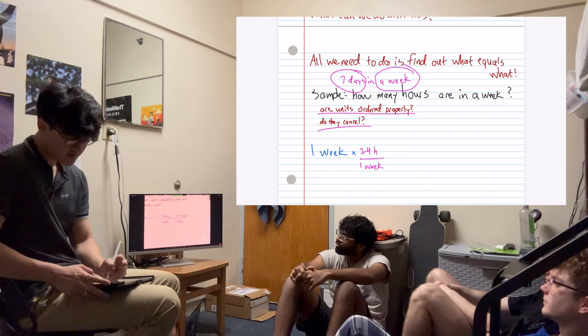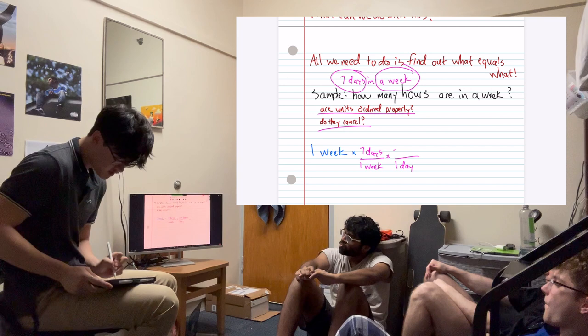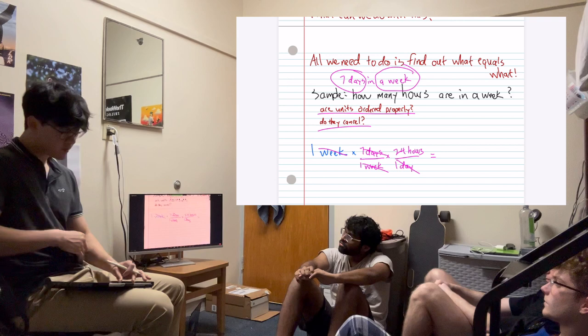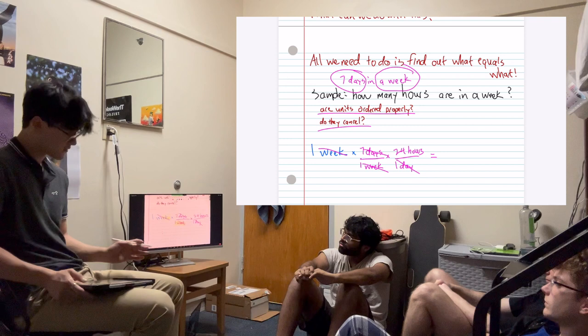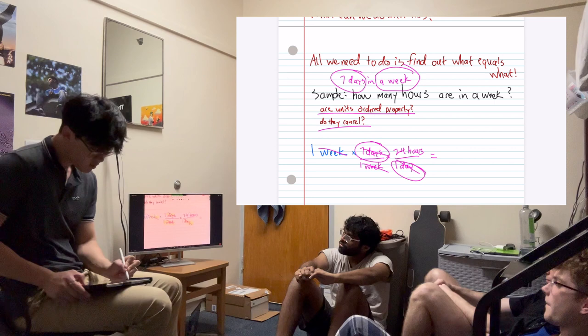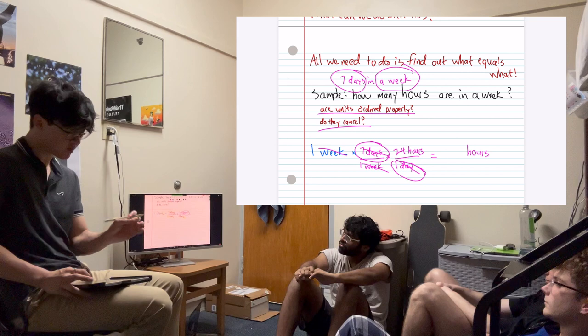So now, all we have to do is multiply and cancel our units. So we cancel one week, one week, and days, and days. And as you guys can see, since one week, the unit week, it's on top and it's also on bottom, which means we can just cancel it. The unit days, there's one on top and there's one on the bottom, so we can cancel the days. We're just left with hours. We have nothing to cancel it with.